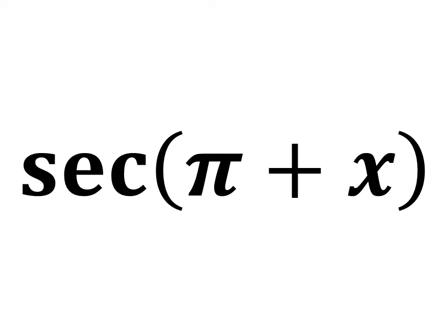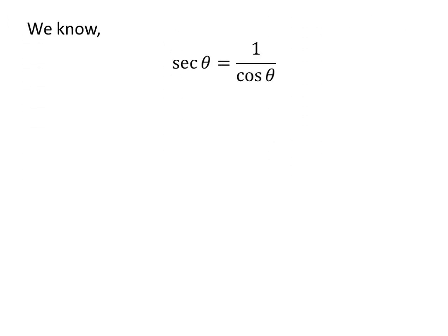In this video, we will learn to find the value of secant of pi plus x. We know secant of theta is equal to 1 upon cosine of theta. So application of the above identity gives us secant of pi plus x is equal to 1 upon cosine of pi plus x.